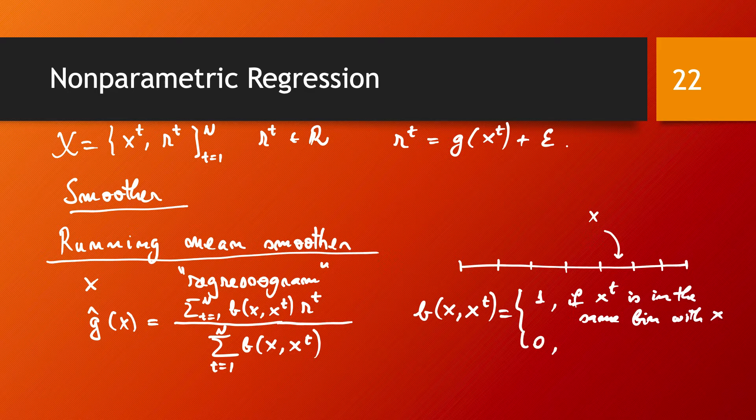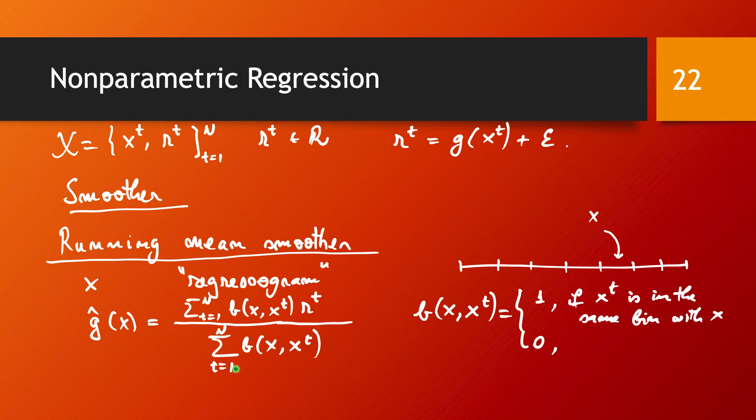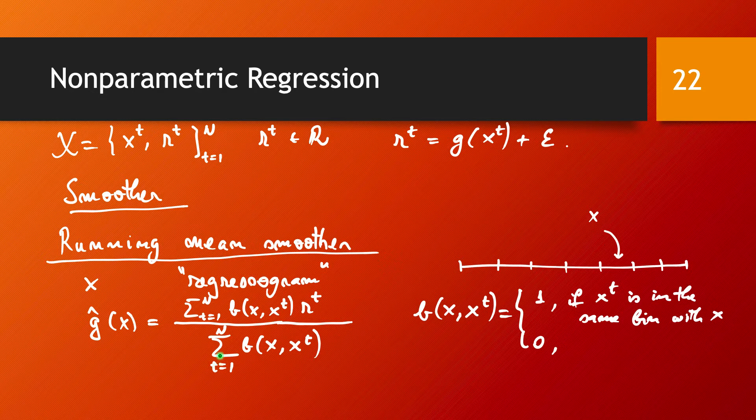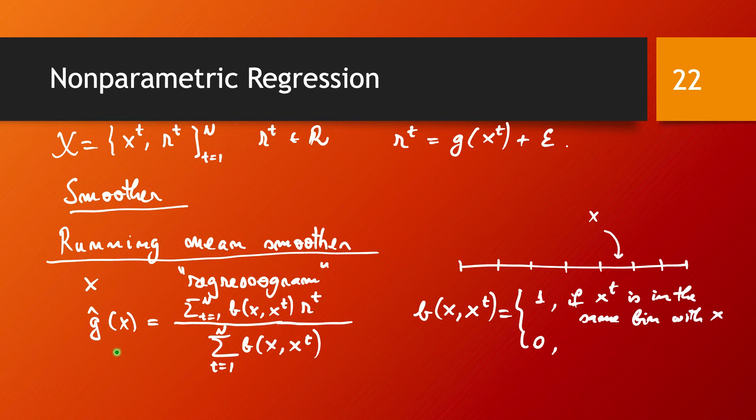In other words, the sum here is going to calculate how many data points you have in the same bin with X, and the sum over here is going to calculate the sum of their values. So all in all, this is going to calculate the average of the values of all the data points that sit in the same bin as X.